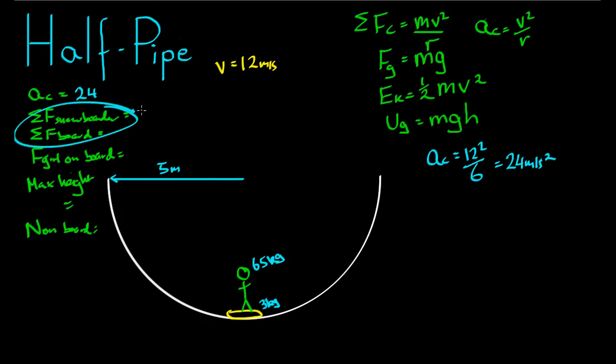Next up, the net force on the snowboarder. If the snowboarder is truly accelerating in that direction at 24 meters per second squared, the net force on that snowboarder is going to equal her mass multiplied by the acceleration. So it's 65 times 24. So 65 times 24 comes to 1,560 N.